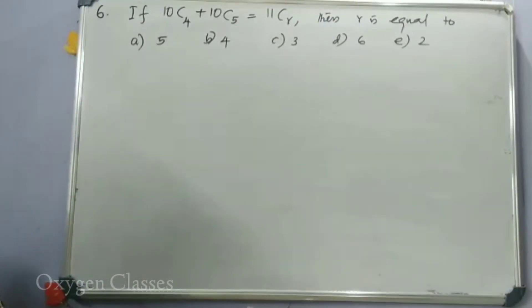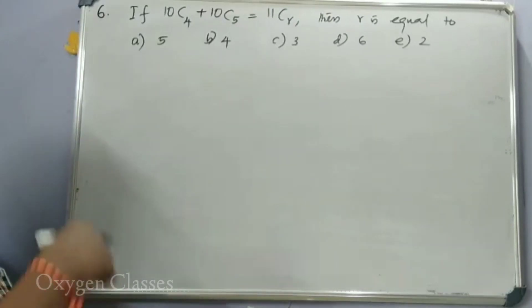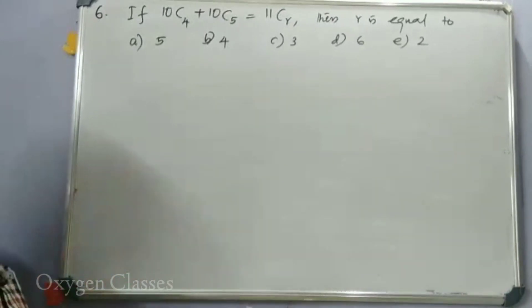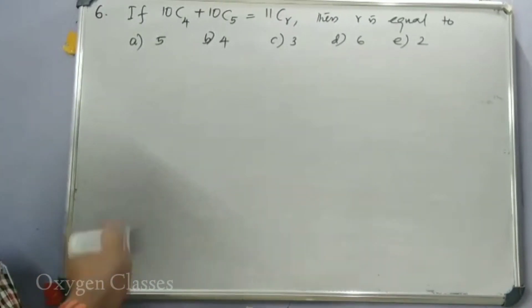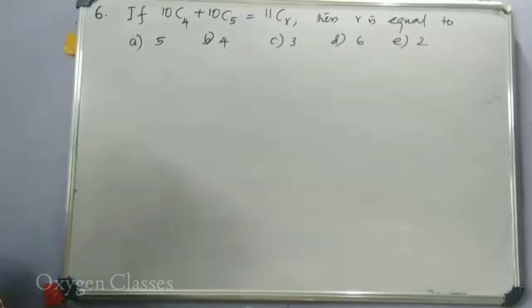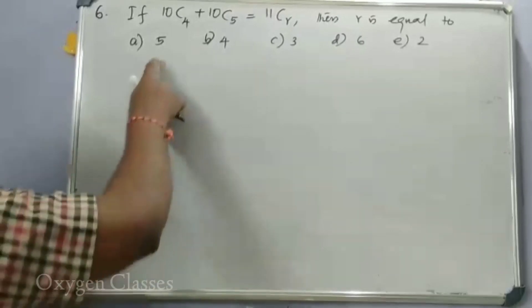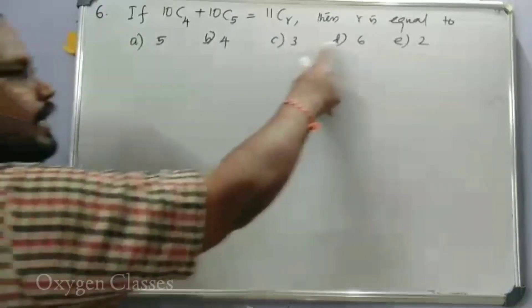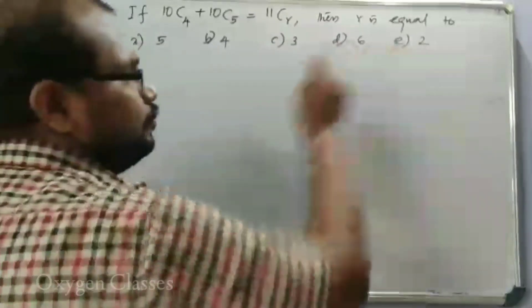Next question: If 10C4 plus 10C5 equals 11C(R), then the value of R is — options are 5, 4, 3, 6, or 2.